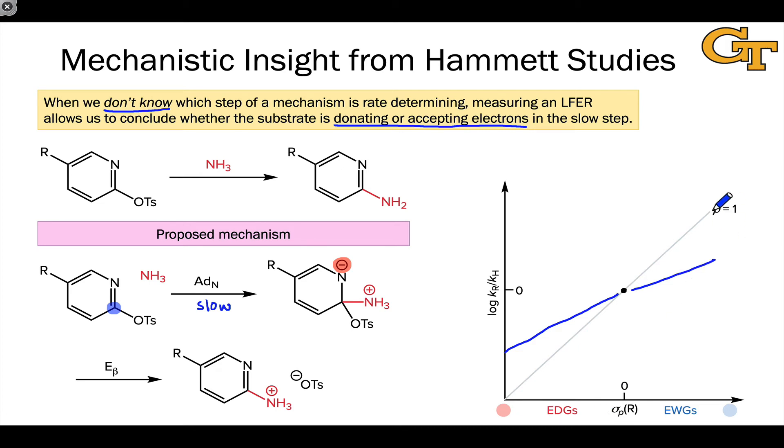Say rho is less than one—this reaction is less sensitive than benzoic acid deprotonation to electronic effects. This would be the rho if the ADsubN step were rate determining.